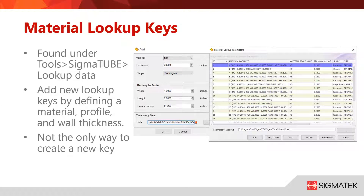To do this simply go to tools, Sigma Tube, lookup data. To add a new key simply click add and fill out the required information. Material, wall thickness, and profile dimensions are all needed. Lastly if your machine requires it you can connect the technology data path that your machine needs for its technology data tables. If you are unsure if your machine requires this it will be talked about during Sigma Tube training or it will be implemented as part of either an on-site or remote training. You can always call or email support if you are unsure.